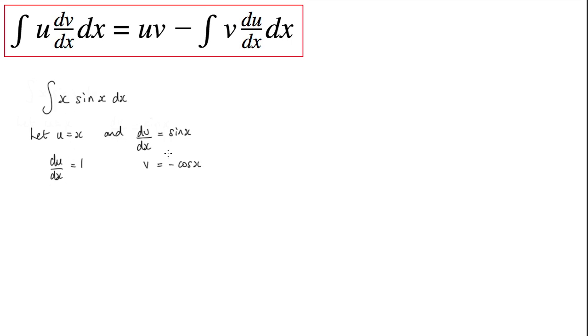The next thing I need to do is pop this into this rule here. So we've got the integral of x sine x dx is equal to the u term, which is x, times the v term, which is minus cos x. So just put that in brackets: minus cos x, minus the integral of the v term, which is minus cos x, times du by dx, which is just 1, with dx on the end.